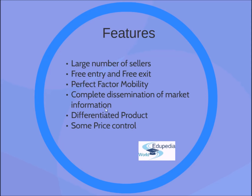There is complete dissemination of market information. Although buyers don't have perfect information, they still have enough to compare the products of two competitors. Coming to the characteristics of a monopoly: a monopolistic firm also sells a differentiated product. It doesn't matter whether the differentiation is real or artificial — it depends on customer perception. The firm sells differentiated products, which can be differentiated in terms of content, physical appearance, or the brand ambassador used to advertise the product. Because products are differentiated, firms have some control over price.